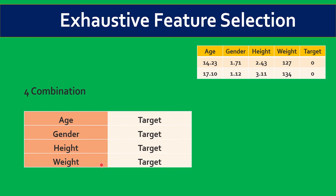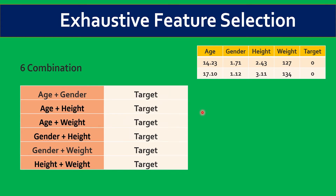So using these four independent variables, it will create 15 combinations with respect to the target variable and create 15 models. In the first four combinations, it picks one independent variable at a time — age, then gender, then height, then weight — and predicts the target variable. Then it takes combinations of two: age+gender, age+height, age+weight, gender+height, gender+weight, height+weight — six combinations. So four plus six equals ten so far.